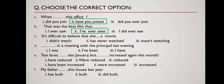Sentence C: 'It is difficult to believe that she [a movie].' Options: 'did not watch,' 'has never watched,' 'wasn't watching.' The correct answer is: 'It is difficult to believe that she has never watched a movie.'